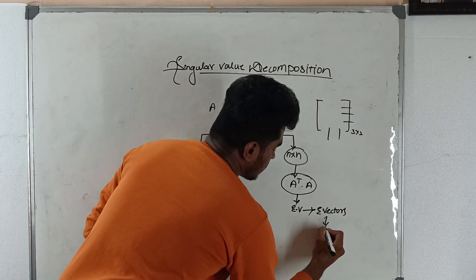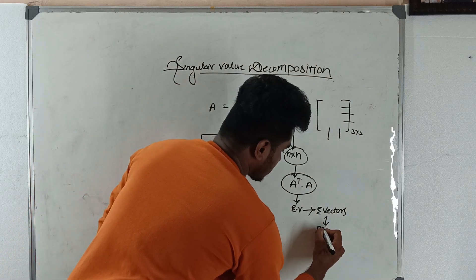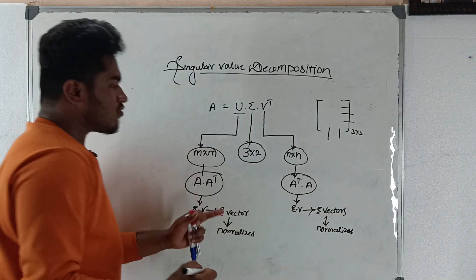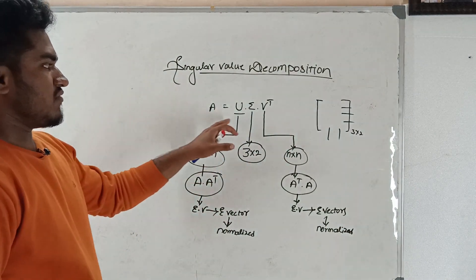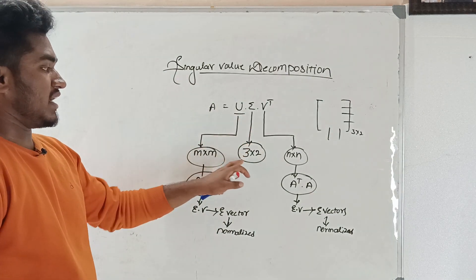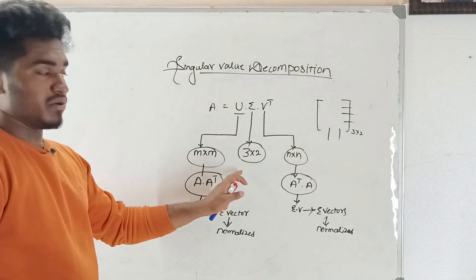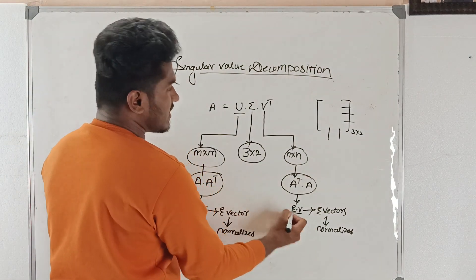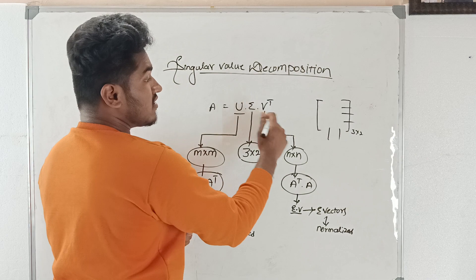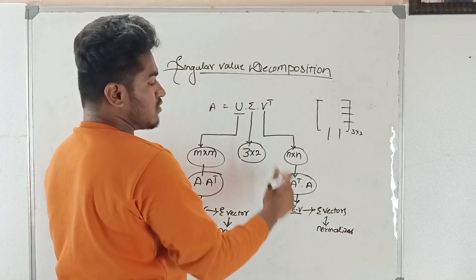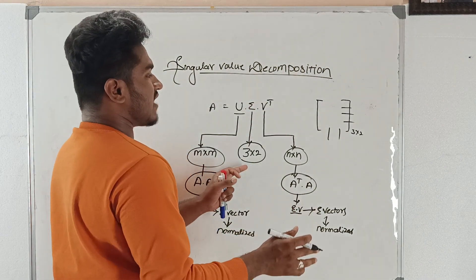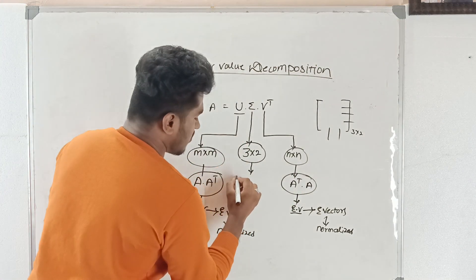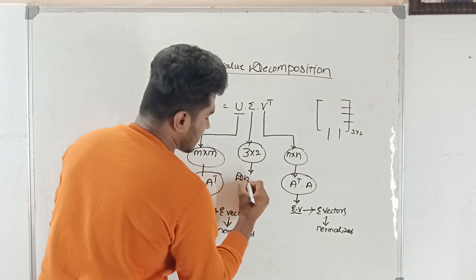After normalization, we obtain the eigenvectors for both U and V. When it comes to Sigma, it is of order 3 by 2. The eigenvalues obtained while finding V are arranged to form a diagonal matrix. Sigma is that diagonal matrix.